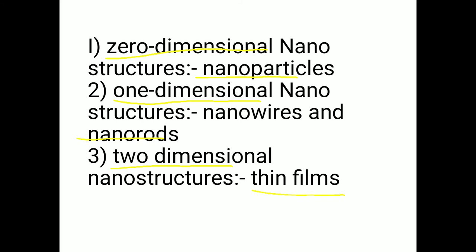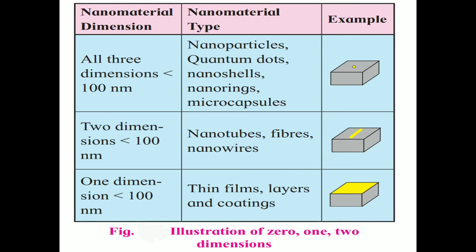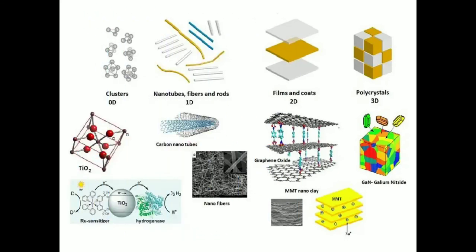In this table we have given the nanomaterial dimensions. For all dimensions: nanoparticles, quantum dots, nanoshells, nanorings, microcapsules. For two-dimensional: nanotubes, fibers, thin wires. For one-dimensional: films, layers, etc. In the diagram we are shown figures of nanomaterials — zero-dimensional as clusters, one-dimensional as nanotubes, fibers, and rods, two-dimensional as films and coats, and three-dimensional as polycrystals. From this you can get an idea of how various dimensional shapes are found in nanomaterials.